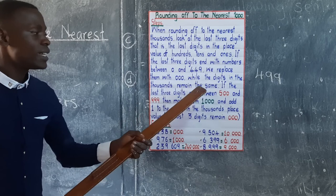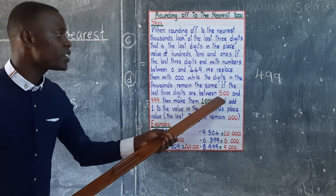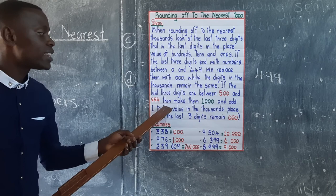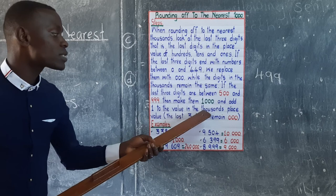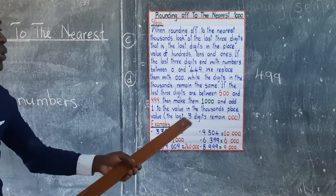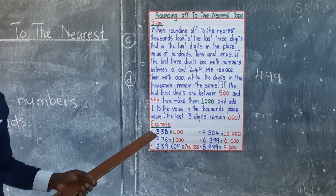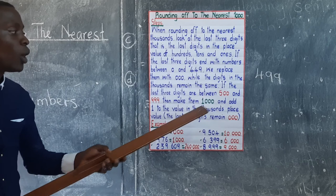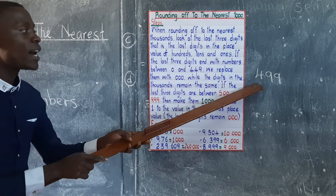Step 3: if the last three digits are between 500 and 999, make them 1,000 and add 1 to the value in the thousands place. The last three digits become 000. For example, 338 is between 0 and 499, so its value is 000.